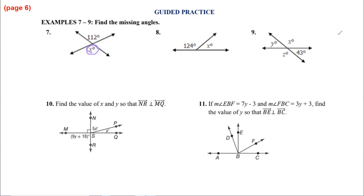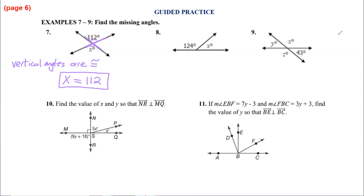So looking at number seven, you see that we have two angles — this one and this one. I want you to recognize — this is the big part of today — I want you to recognize that they are across from each other at an intersection. So we've got this angle and this angle right here. Those angles across from each other at an intersection are vertical angles. How do vertical angles relate to one another? They are congruent, so the measures of each angle are equal to each other. Vertical angles are congruent. That means that X and 112 should be equal to one another. X equals 112. That's all.